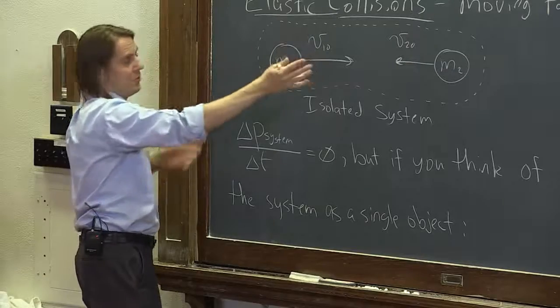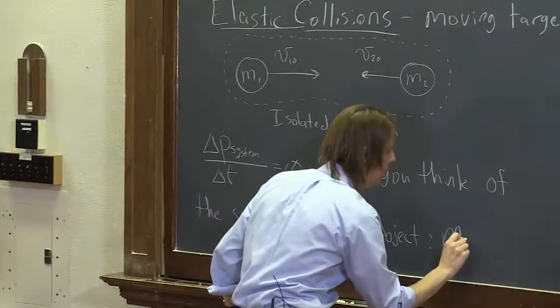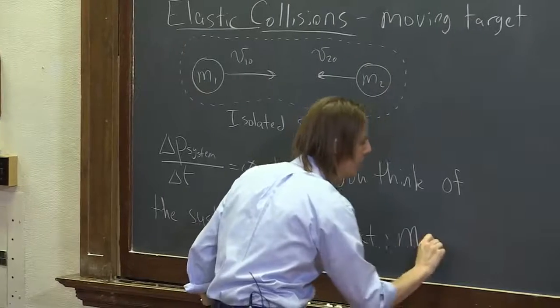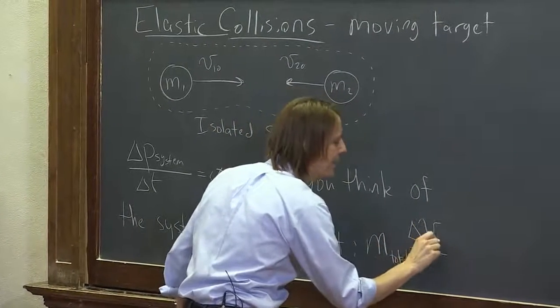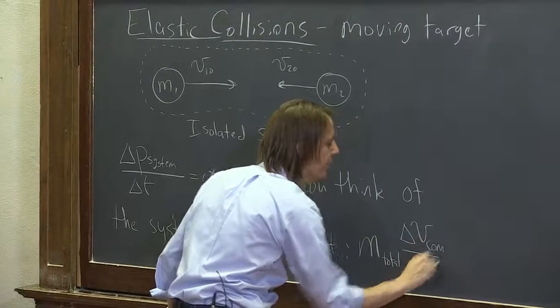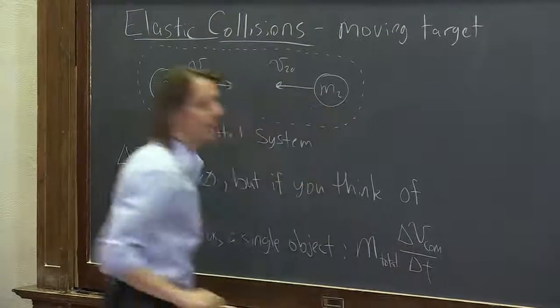So the mass of the whole system would just be the mass total, right? M total. The delta v, what kind of delta v would that be? It would be the change in velocity of the center of mass.